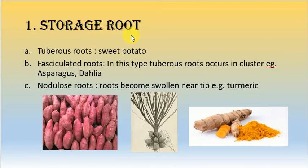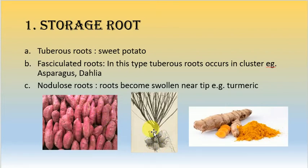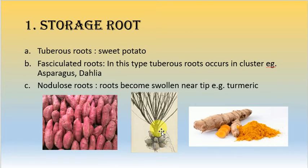Now the modifications of the adventitious root system for storage: due to food storage, the root system becomes thick and fleshy. The first type is the sweet potato tuberous root. The second is the fasciculated root — unlike tuberous roots which are not in clusters, fasciculated roots always develop in bundles or clusters, as seen in asparagus and dahlia. The third type is the nodular root, where the root is in the form of nodules, as seen in turmeric.